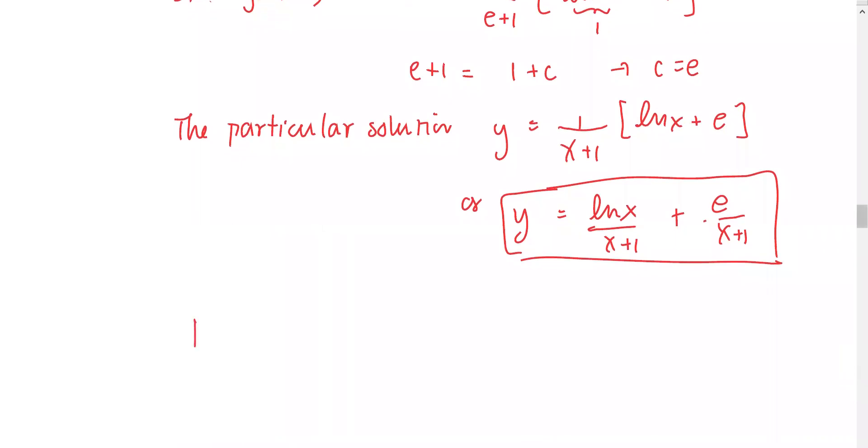Next, we consider the transient term. There are two terms. The limit of ln(x)/(x+1) as x approaches infinity will be zero.